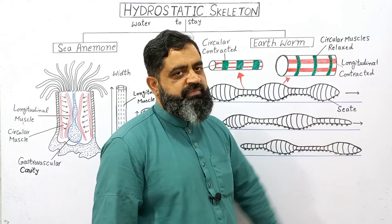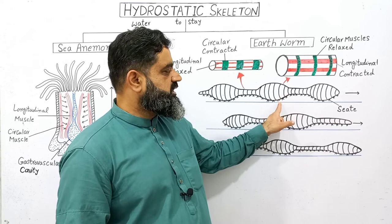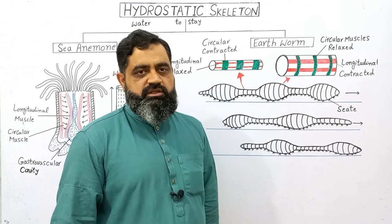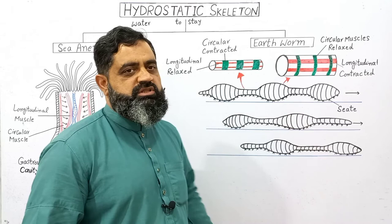At the same time, these animals also contain a pair of chitinous bristles known as setae (chaetae), which are present in each segment of the body. These setae help to penetrate the soil and drag the body forward. So with the help of setae and muscles, these animals can move forward. In this way, today we discussed hydrostatic skeleton with the help of two examples.